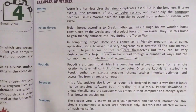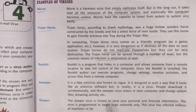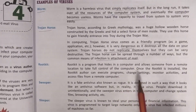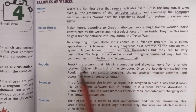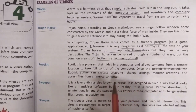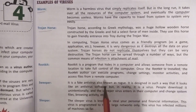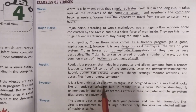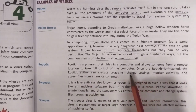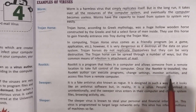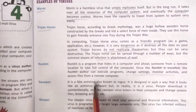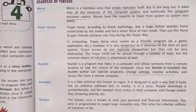Next is Rootkit virus. Rootkit virus is a program that hides in a computer and allows someone from a remote location to take full control of the computer system. Once Rootkit virus is installed in your computer, the other person who has control of your computer is able to make changes in the settings of your computer, monitor activities, and also access files from a remote location.